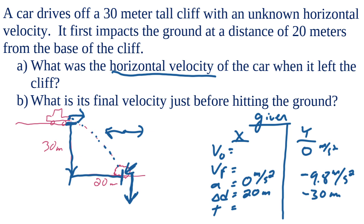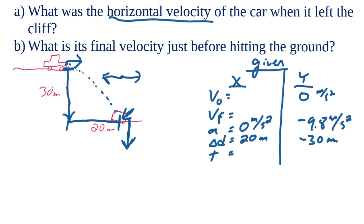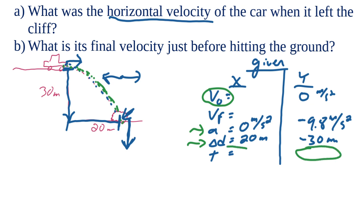Remember, we keep our x and y values isolated from each other. We're ultimately looking for the horizontal velocity, but in x we only know two things. The key insight is that once the car is in the air, time is the same both horizontally and vertically — there's no such thing as separate x-time and y-time. So if we find time in y, we know it in x too.